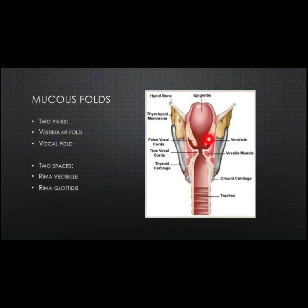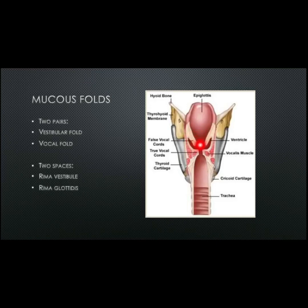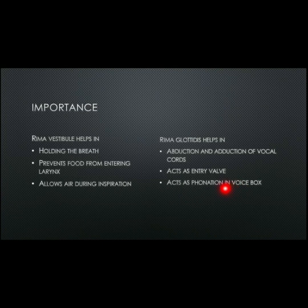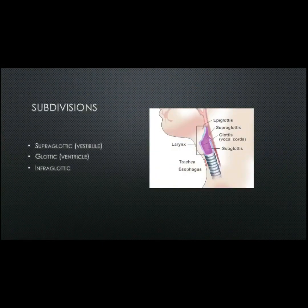Now we move on to mucous folds, which are of two parts: the vestibular fold derived from the vestibular ligament, and the vocal fold derived from the vocal ligaments — the false vocal cords or vestibular folds, and the true vocal cords or vocal folds. Two spaces exist between these folds: the rima vestibuli between the vestibular folds, and the rima glottidis between the vocal folds. The rima vestibuli helps in holding the breath, prevents food from entering the larynx, and allows air during inspiration. The rima glottidis helps in adduction and abduction of vocal cords, acts as an entry valve, and serves as the phonation and voice box.